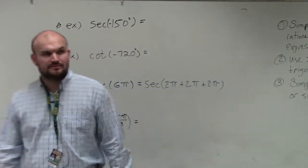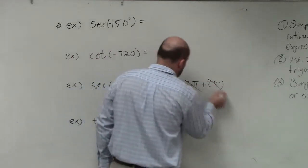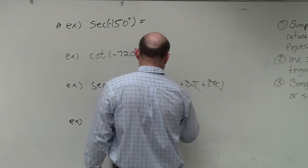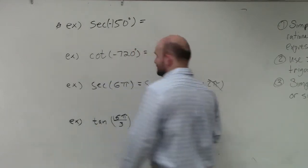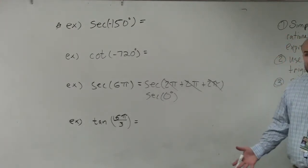Those are all periods, right? They're all just redundant circles. So you guys gave me basically the exact same angle again. Secant of 6π is equivalent to secant of 0.